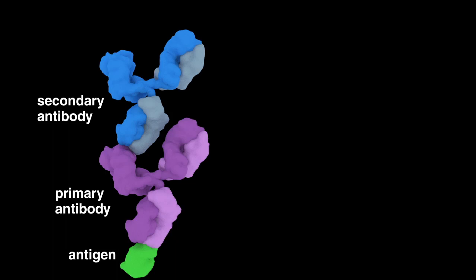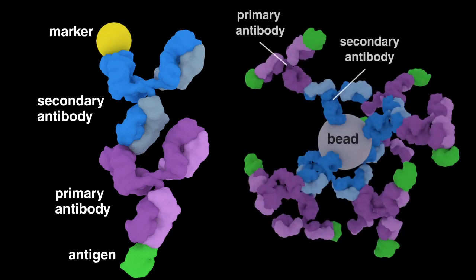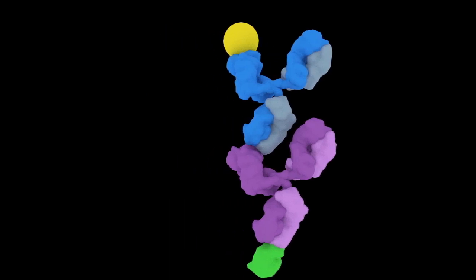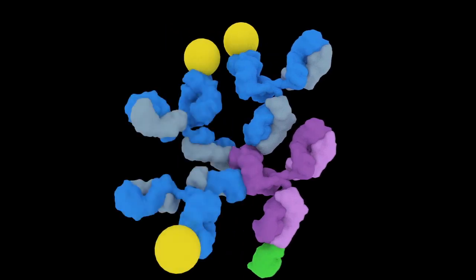Depending on the application, secondary antibodies might be conjugated to a marker or a bead, which allows for easy detection or isolation of the protein of interest. The use of a secondary antibody leads to amplification in signal since multiple secondary antibodies can bind to a primary antibody.